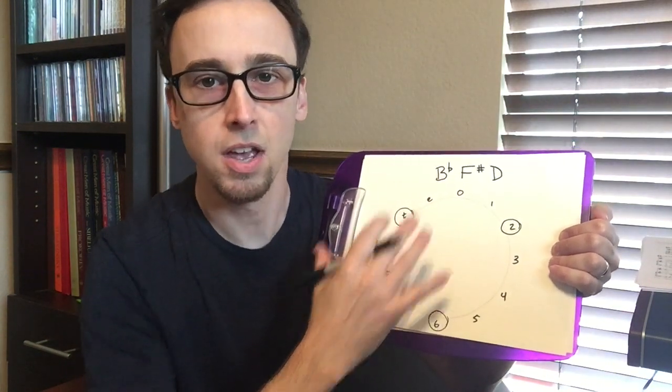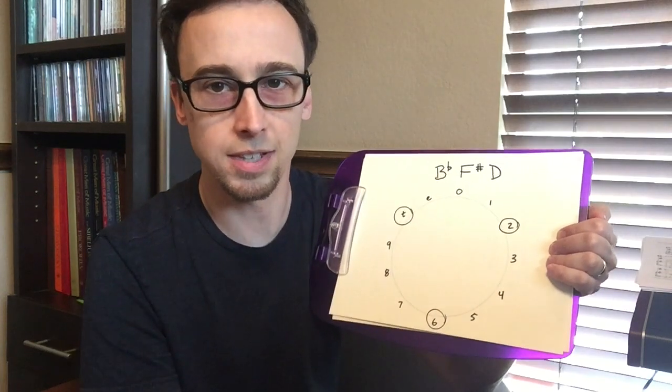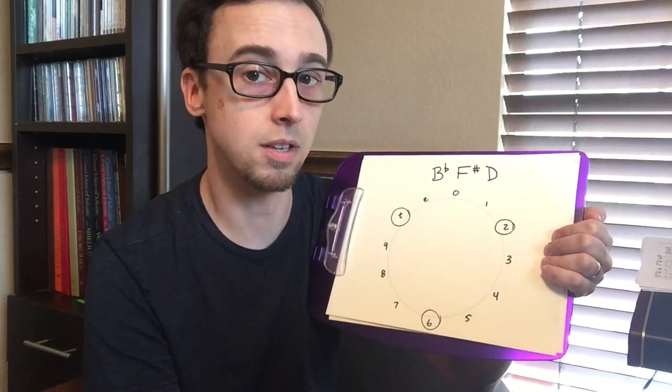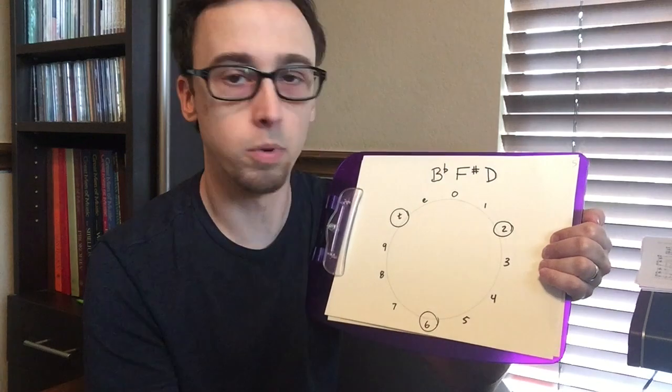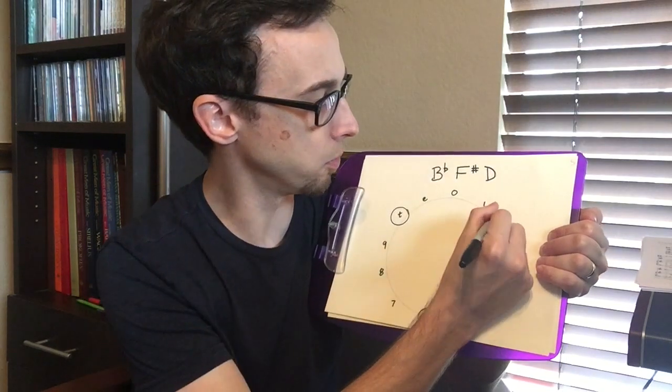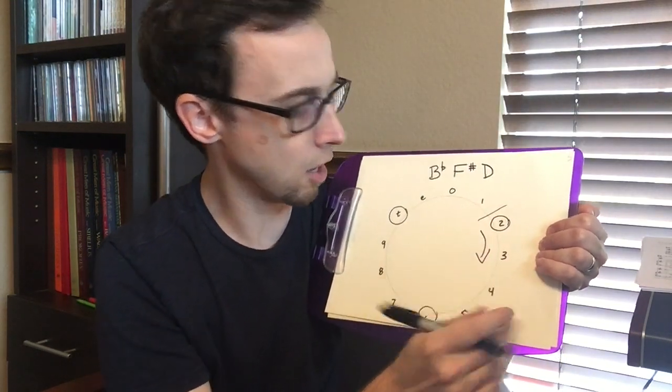It's symmetrical, right? All of the intervals are the same. So when we're presented with a situation like this, we want to just order it with the lowest integer first. So we'll start on the two and read it that way.